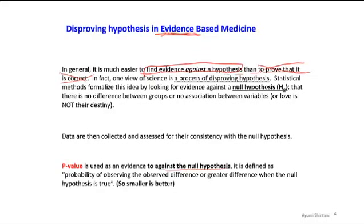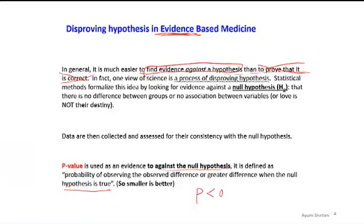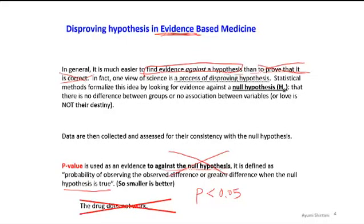When we convert this to science — trying to prove an effective drug — we can say the p-value is the probability of observing the observed difference, or a greater difference, when the drug is not effective. Therefore, you want that probability to be small. Conventionally, we use 5%: if the p-value is less than 0.05, then we can say 1 in 20 is hard to believe it happened just by chance. In that case, we reject the null hypothesis and use that as evidence to prove the drug in fact works.